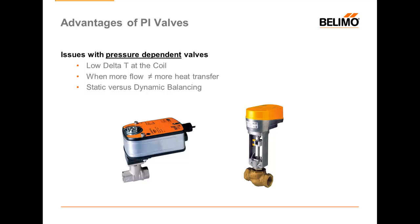Let's take a look at a few things that are wrong with valves that utilize position control, because frankly the valves that use flow control operate much more how our brains think that all valves operate. We're going to look at pressure-dependent valves in terms of how low delta-T is generated in the coil, points on the coil curve where additional flow no longer nets us any more heat transfer, and then we'll talk about the difference between static and dynamic balancing within our system.